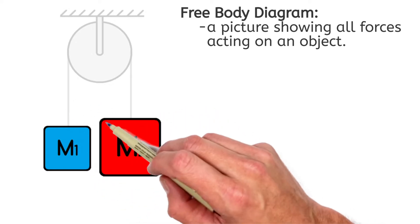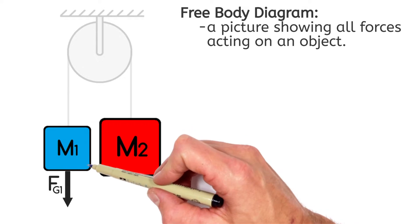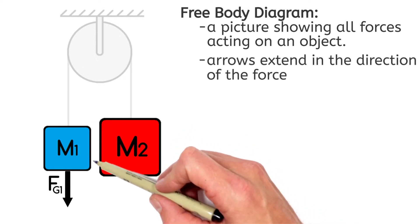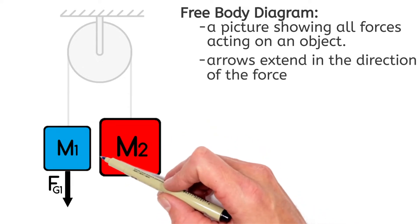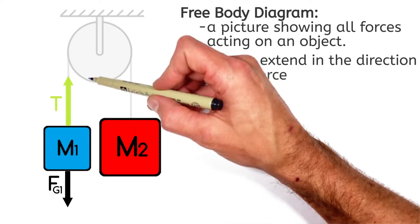So starting with this block over here, this block has some force by gravity acting downward on it. I'm going to call that the force by gravity on block one. And this block is going to be pulled up by some tension in the string. I'm going to call that T.